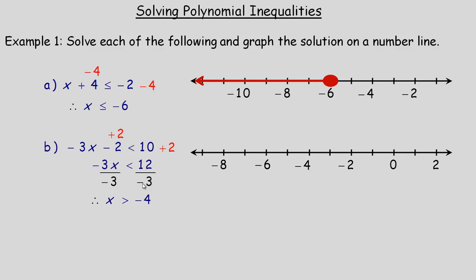When you divide an inequality by a negative, it switches the direction — notice this was less than, and now it's greater than. Here's why: 2 is less than 7, that's a true statement. If we multiply both sides by negative 1, we get negative 2 on the left and negative 7 on the right. We can no longer put a less than there, because negative 2 is actually greater than negative 7. So the inequality changes direction when you multiply or divide by a negative.